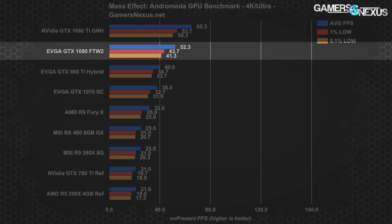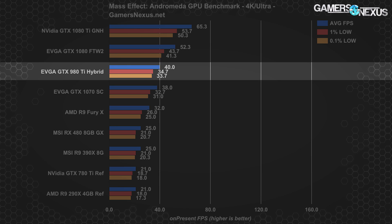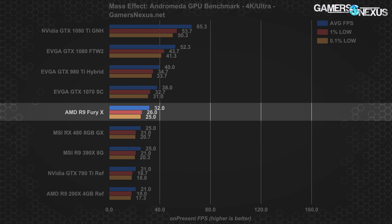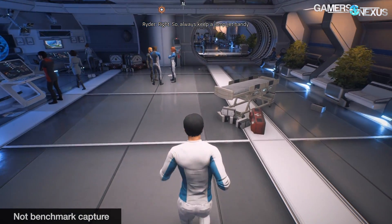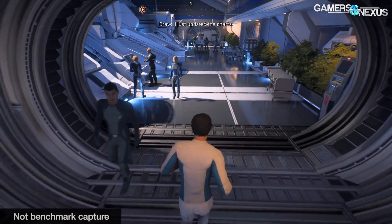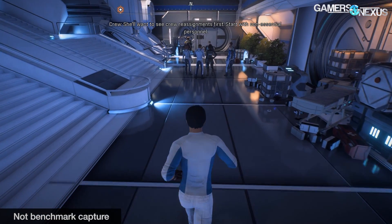Moving down the list, the 1080 FTW2 from EVGA runs about 20% slower than the 1080 Ti at 52 FPS average, with lows about 10 FPS below the 1080 Ti's 1% and 0.1% values. This is still plenty playable even at Ultra, as Mass Effect Andromeda feels fluid enough at around 50 FPS. The GTX 980 Ti hybrid runs about 39% slower than the Pascal 1080 Ti, placing at 40 FPS average with lows just above 30. AMD's R9 Fury X lands at 32 average with lows in the 20s. At this point, alongside the 1070 at 38 FPS, we're beginning to experience more frequent and observable stutters. For the Fury X, 1070, and potentially 980 Ti, we'd recommend dropping to medium settings.